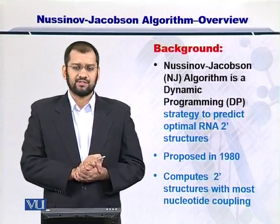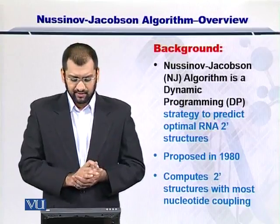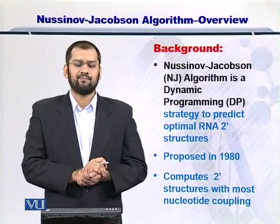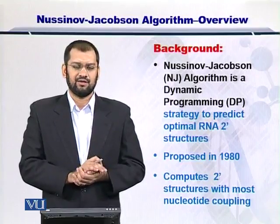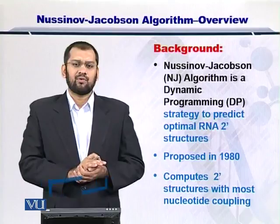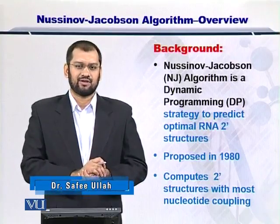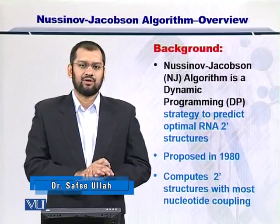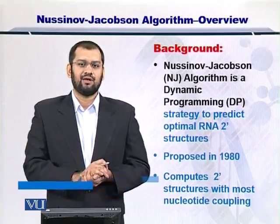So as I just mentioned, Jacobson-Nusinov or simply NJ algorithm is used to predict the secondary structures in the RNAs. Dynamic programming divides the problem and then conquers it. So NJ algorithm does that in a very nice and easy way for us.